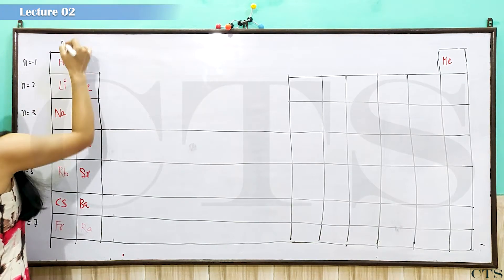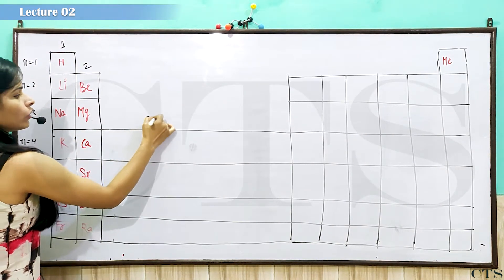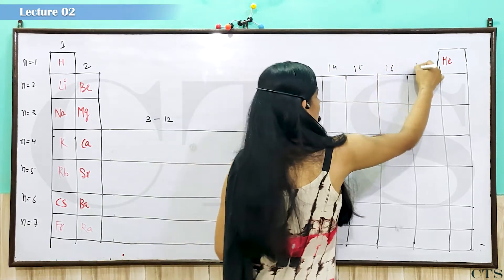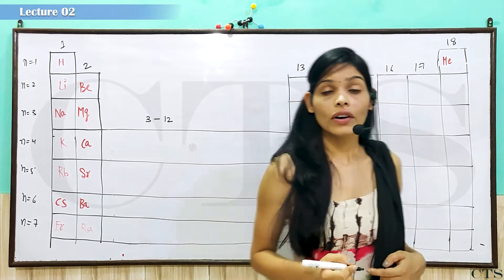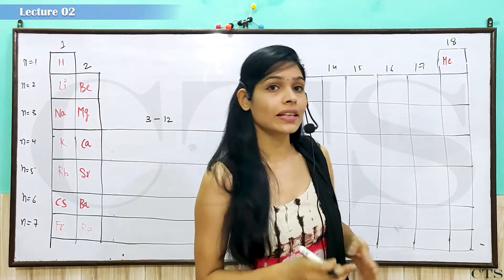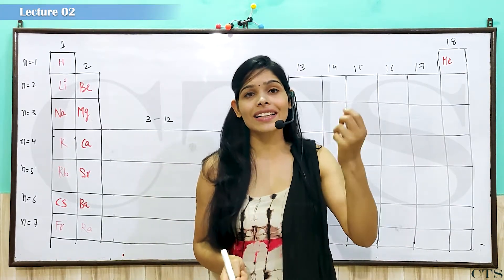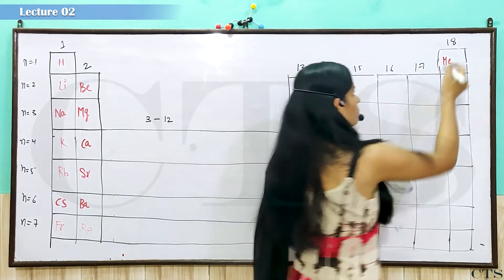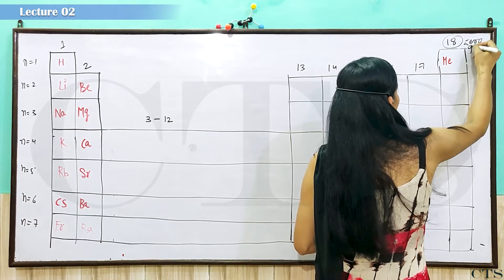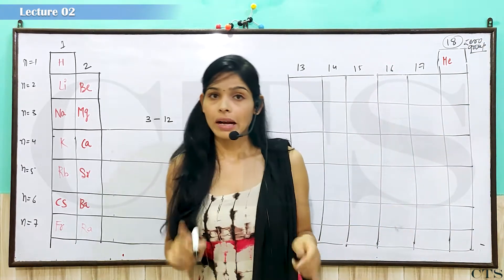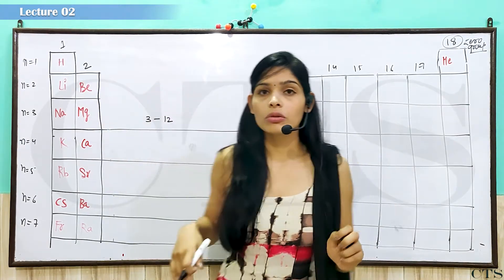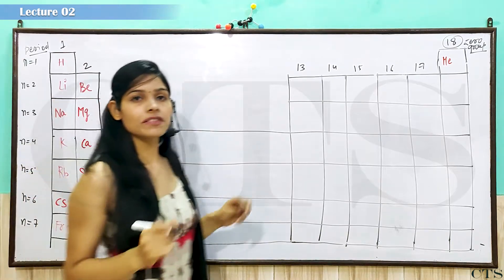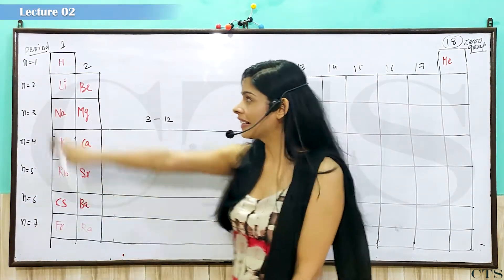Ab yahaan pere dhekhi beta ji, one, yhe ho gaya two, ab yaha beta ji, yahaan jho hota hai, yhe hota hai, three se leke twelve tuk ka. Phir yaha hota hai, thirteen, fourteen, fifteen, sixteen, seventeen, and eighteen. Aur khas bat yeh thi ki joh haemari noble gases thine, yani ki woh gases joh noble hai, joh kisii or se react nahi kerti hai, unko bilkul alag column dhiya gaya tha.